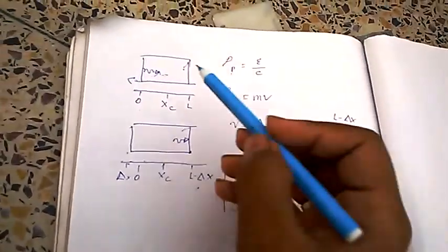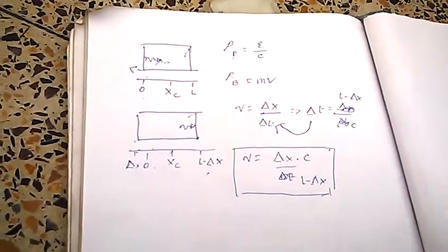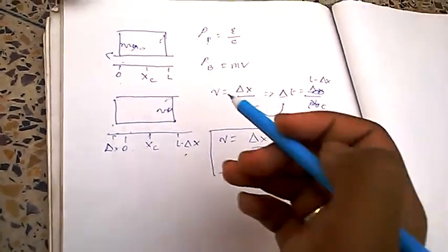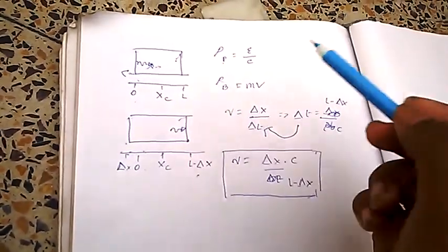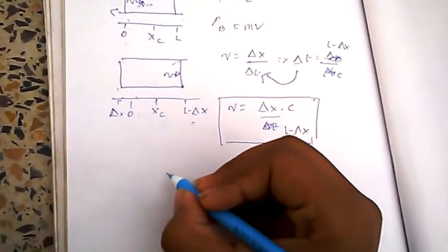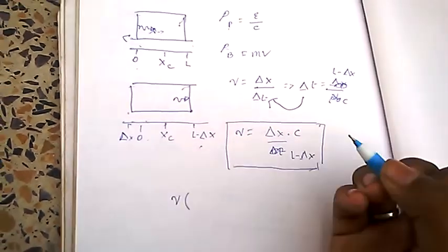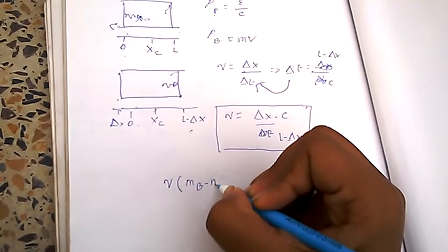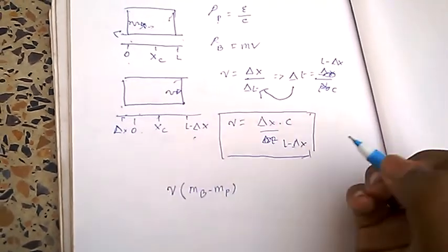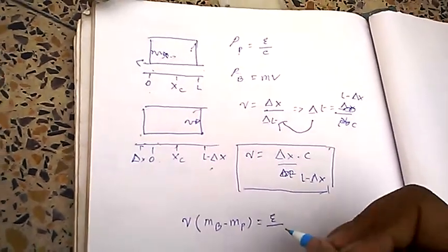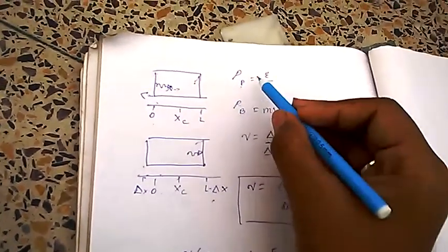Now, as this phenomenon is known as conservation of momentum, we know that the momentum of photon is equal to momentum of the box. So, we know that velocity of box into the actual mass, which is mass of box minus mass of photon, is equal to energy by C, which is the momentum of photon.